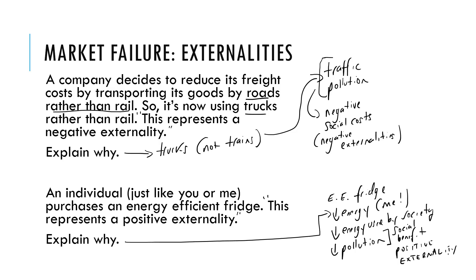So in this video we've looked at the idea of market failure — markets failing where private benefits and private costs do not reflect the social costs of production. We can see that when market failure occurs, when the costs privately are not equal to those socially, we can get negative externalities and also positive externalities.